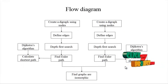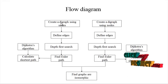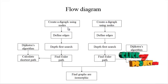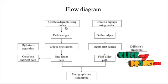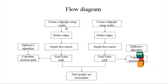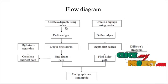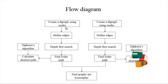Now let us discuss the flow diagram of the process. These are the overall flow diagram. First of all, creating a digraph using nodes — digraph is one type of inbuilt function. Two types of processes are simultaneously running, and finally we define two graphs as isomorphic or not.